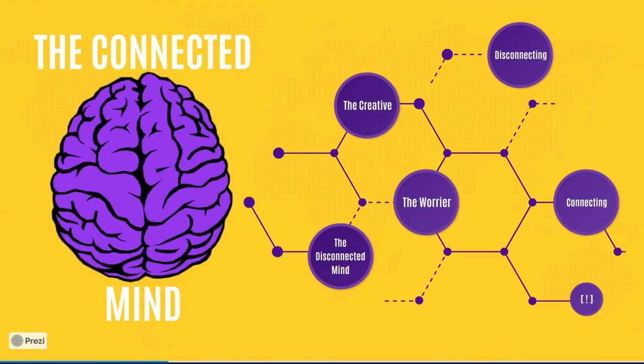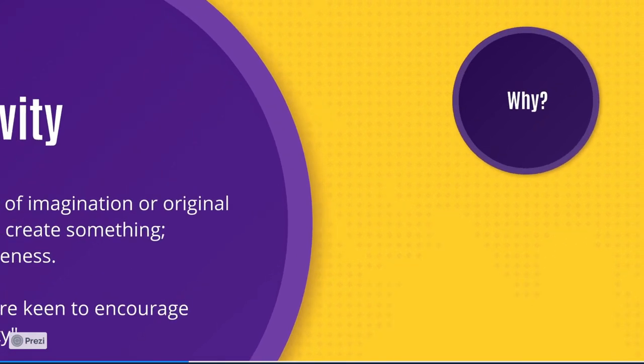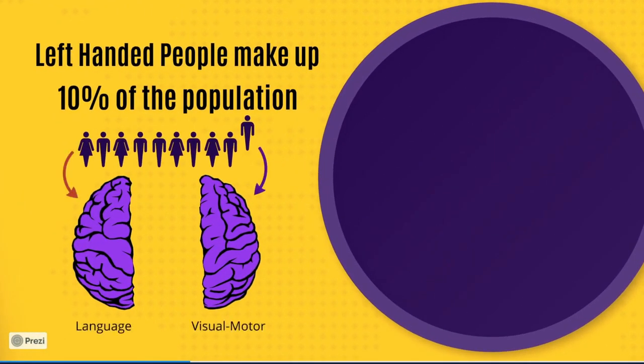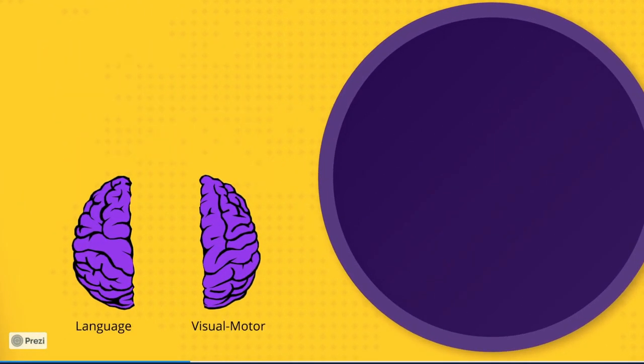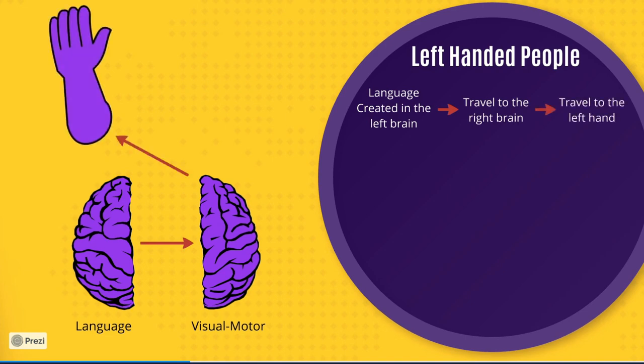You may have heard that left-handed people are typically more creative, as they can visualize better due to their dominant right visual motor skills brain. But being able to draw better doesn't automatically make you better at solving problems. Well, as we now know, the left brain creates our language. So for these left-handed people, the words are still made in their left brain, but they then have to travel to their right dominant side and then down to their left hand to write. Over their development into adulthood, the connections between their two minds become stronger and stronger.